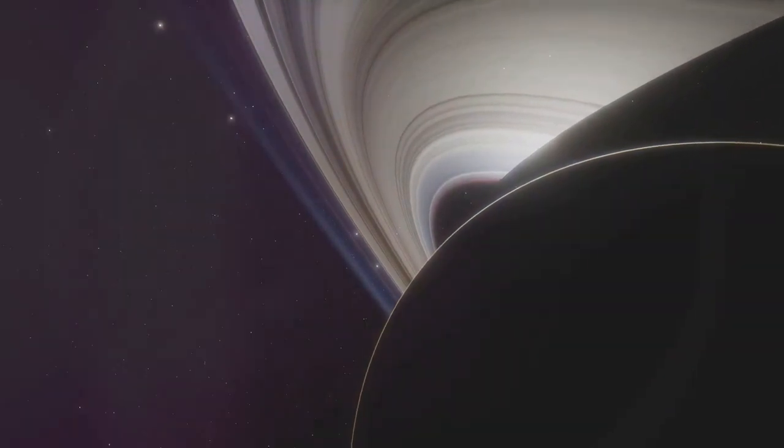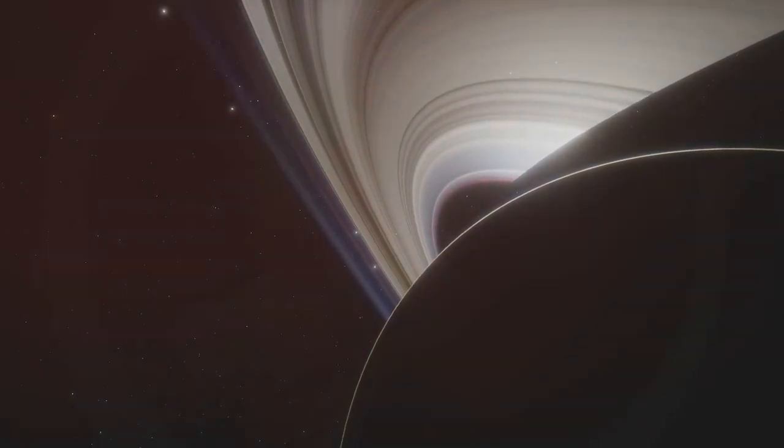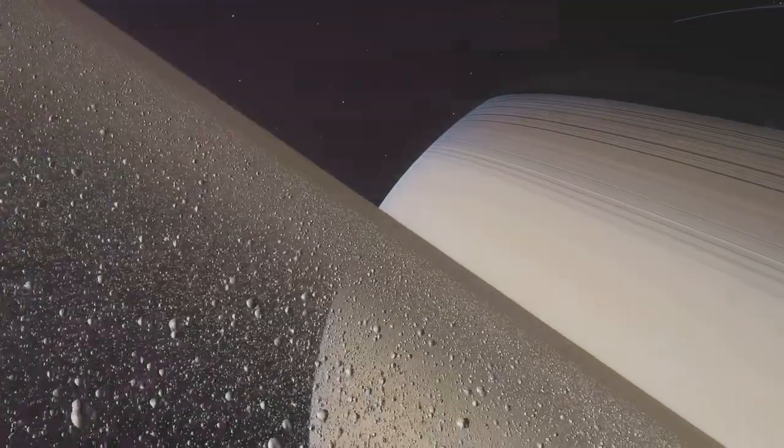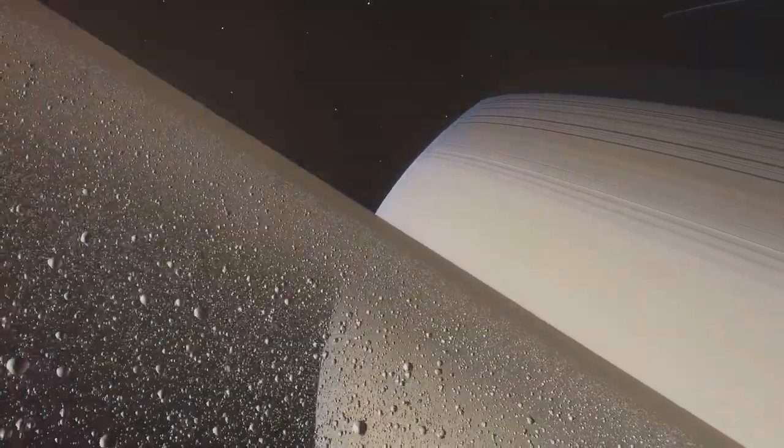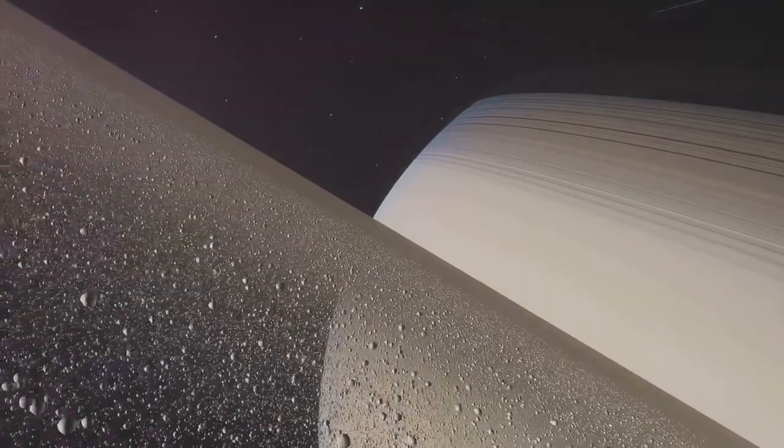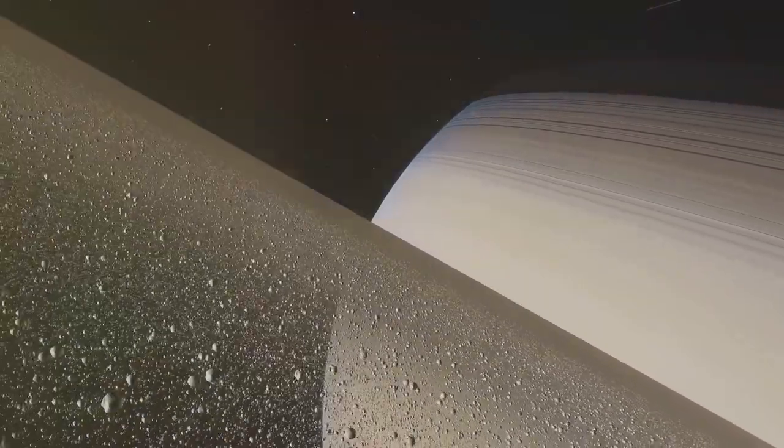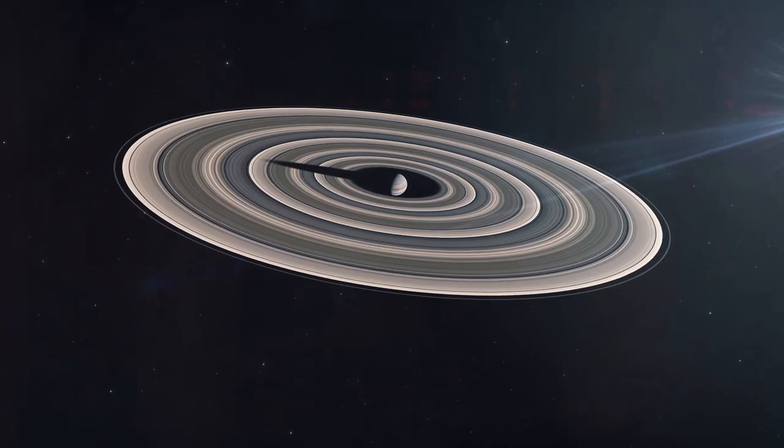Planetary rings are disks of dust, rock and ice that orbit around planets, offering us a remarkable insight into the dynamics and history of our cosmic neighborhood. They hold secrets to our solar system's past and clues to phenomena that continue to puzzle scientists.